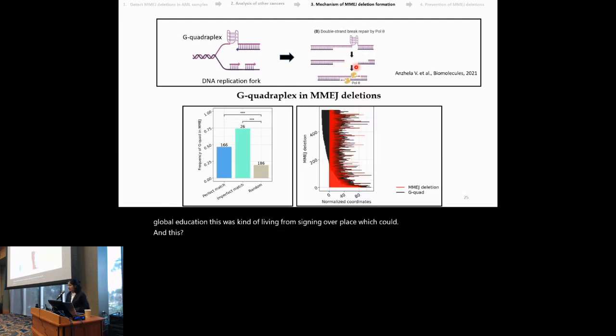Next, we checked whether our MMG deletions are enriched for GC-quadruplexes and we saw that both the perfect and the imperfect matched deletions were enriched for GC-quadruplexes as compared to random deletions. Then we wanted to see if there's a bias in the GC-quadruplex whether they occur to the left or right of the MMG deletions and we saw that there was no such bias. All in all, we conclude that MMG deletions are enriched for both mini-satellites and GC-quadruplexes.